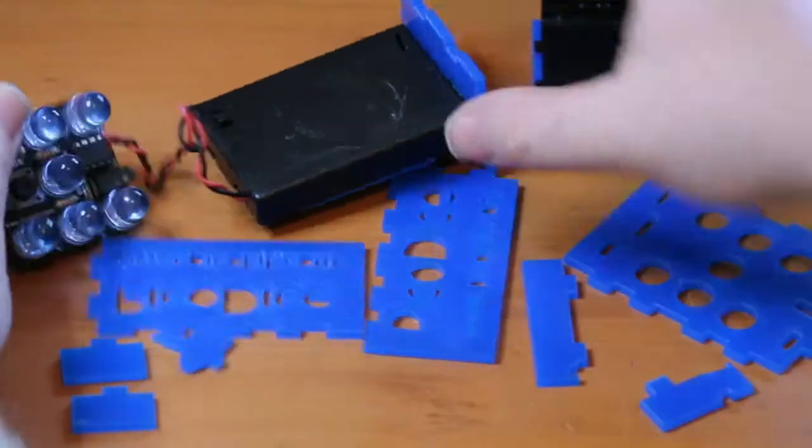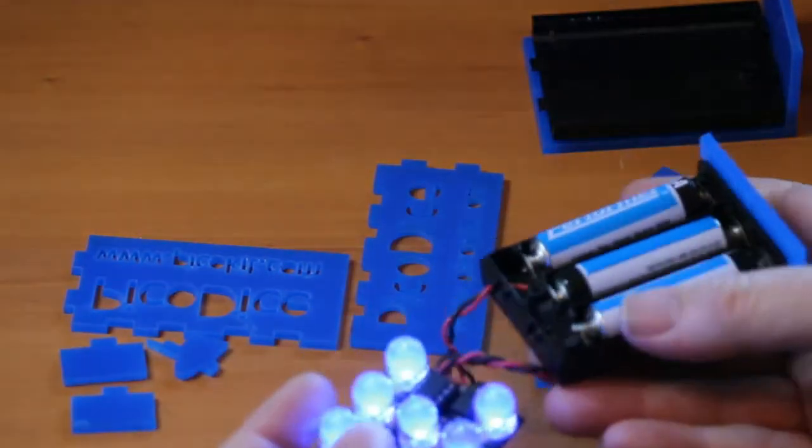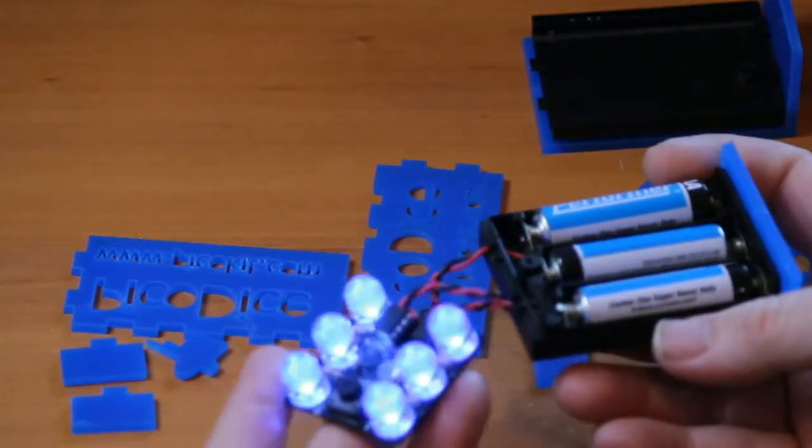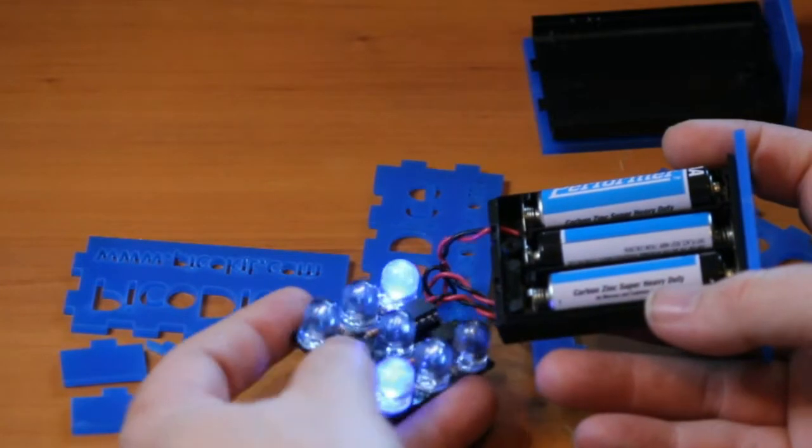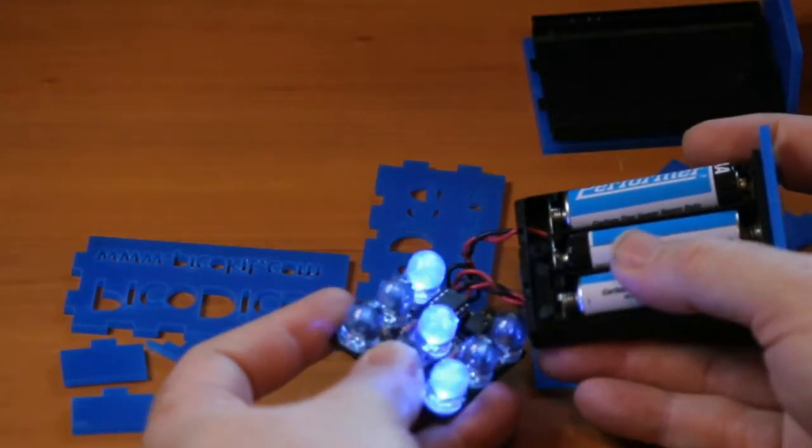Now it's just a standard PicoDice. I can turn that on and you can see it's already programmed to work when I press the button. And so it comes up with a random number in a nice blue color.